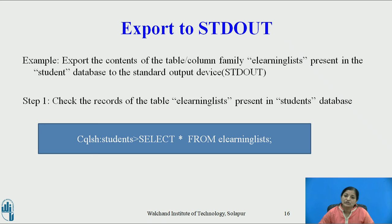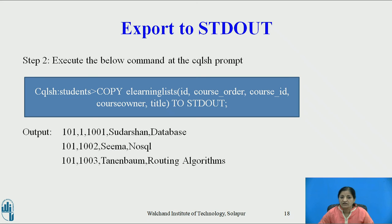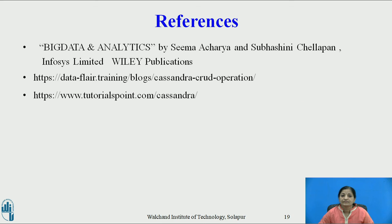To export data to the standard output device: export the contents of the table elearninglist in the student's database to stdout. Step 1 — check the records using SELECT * FROM elearninglist; the table consists of three rows. Step 2 — execute COPY elearninglist followed by the column list TO stdout. Immediately the output is displayed on the console showing all three rows copied to the standard output device. These are some of the references. Thank you.